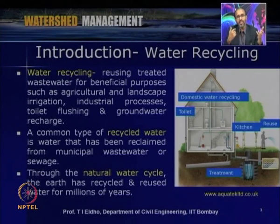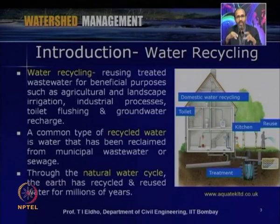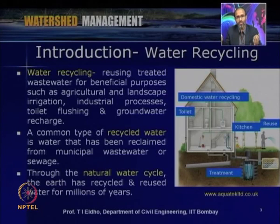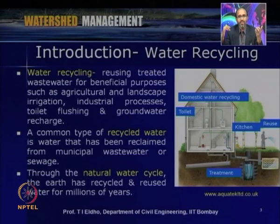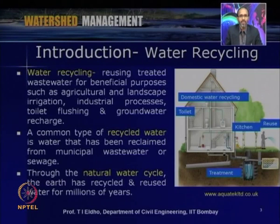When we look at the hydraulic cycle, nature is also doing the same thing. Through the natural water cycle, the earth has recycled and reused water for millions of years — water comes as precipitation, goes through the hydraulic cycle, evaporates, and comes back as rainfall. But in terms of water recycling here, what we are discussing is how we can give some treatment and reuse water for various purposes: agricultural, industrial, domestic, or other kinds of purposes.